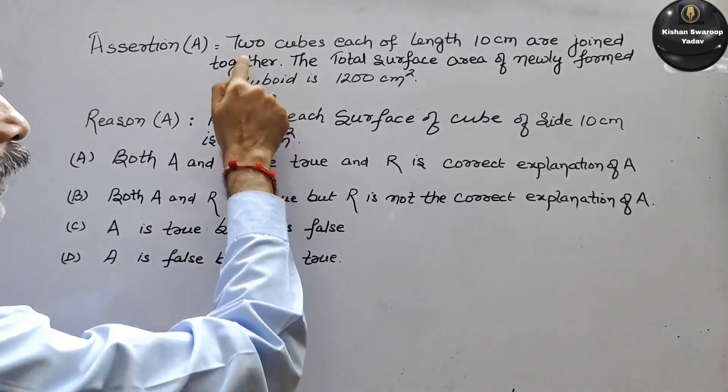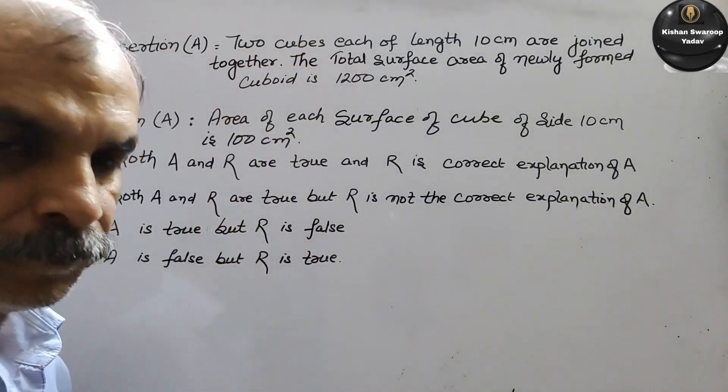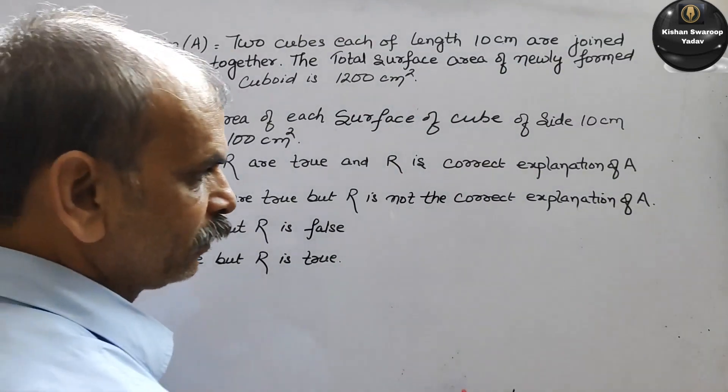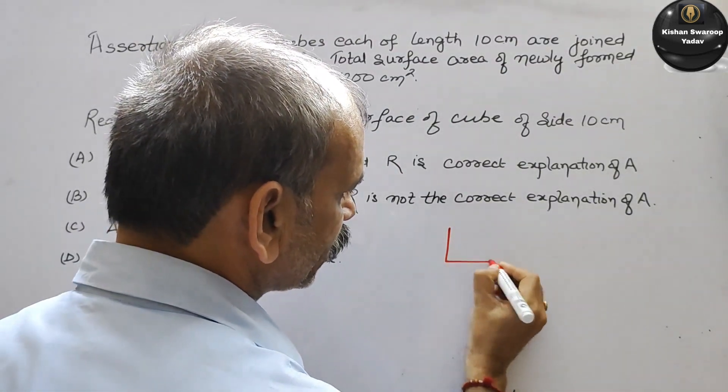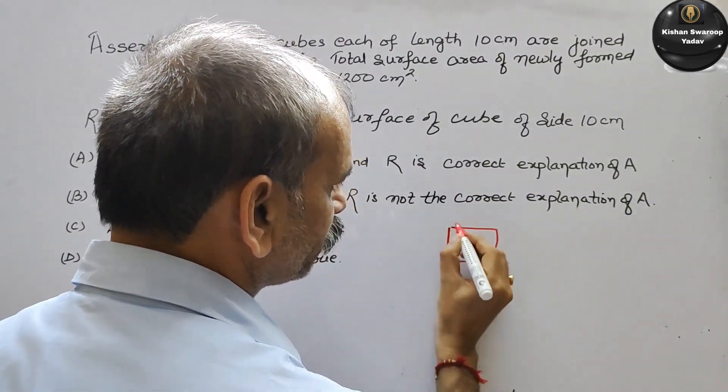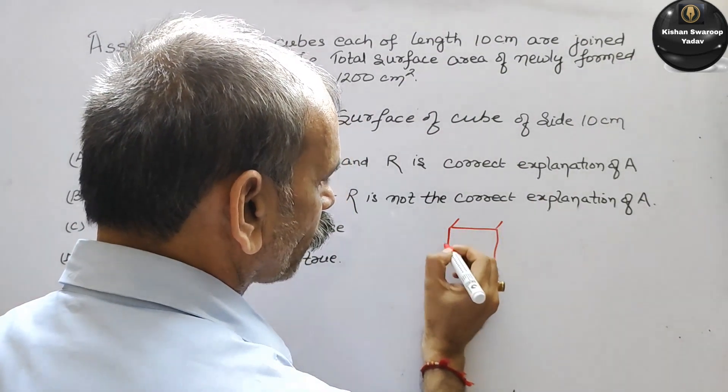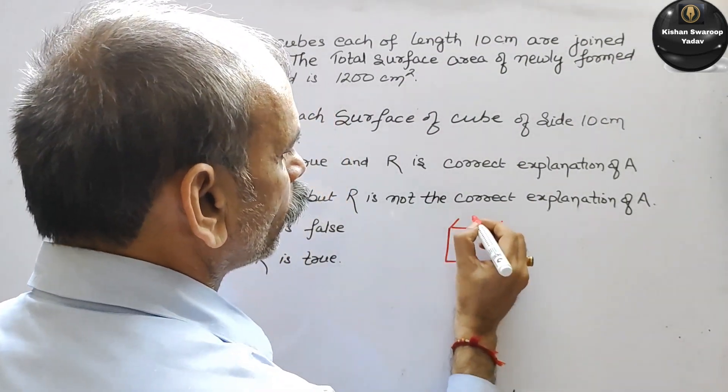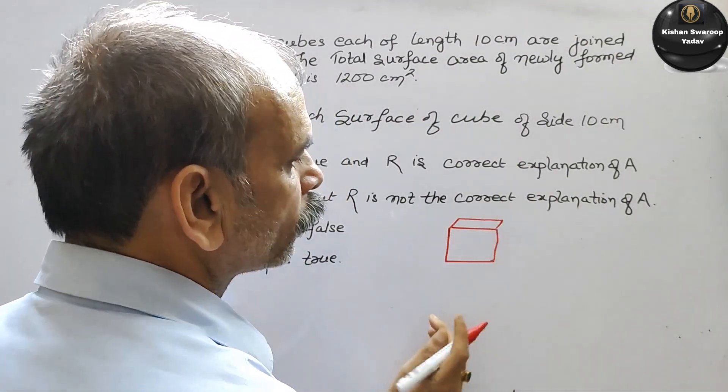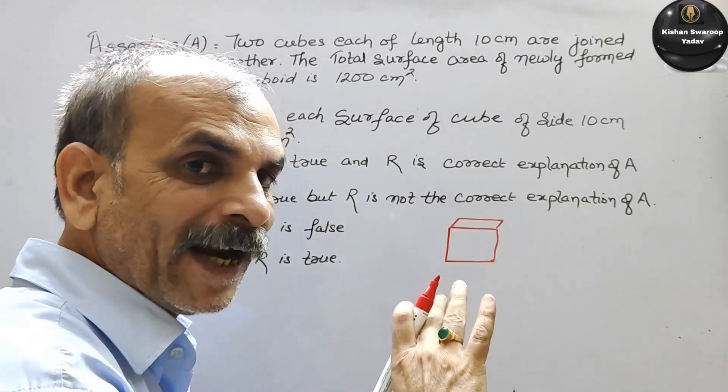So first, it says two cubes. You have two cubes. How are they? One is like this, and the second one is added to it.